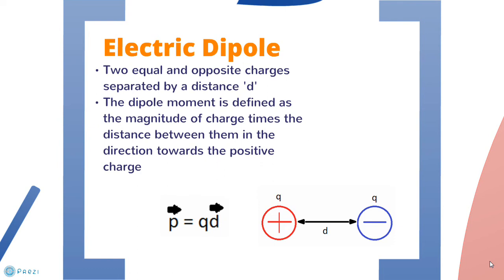A dipole moment is a vector and the need for direction will become clear when we apply the idea of a dipole to the heart.